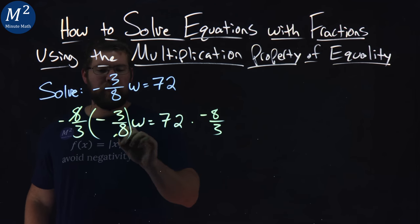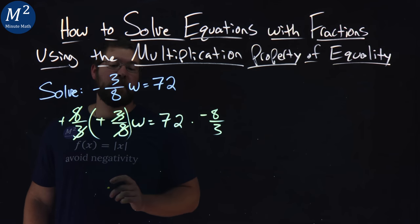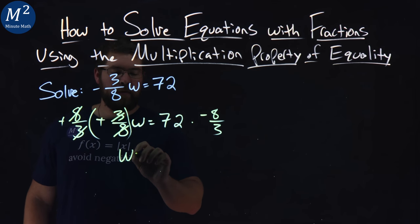Left side, 8s cancel, 3s cancel, everything becomes positive, negative times negative is a positive, and we have w by itself.